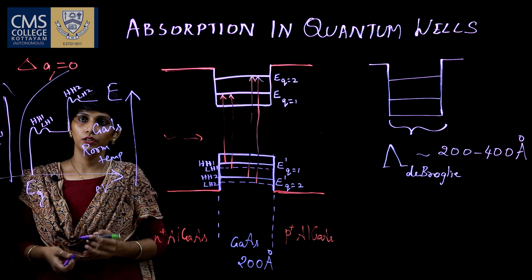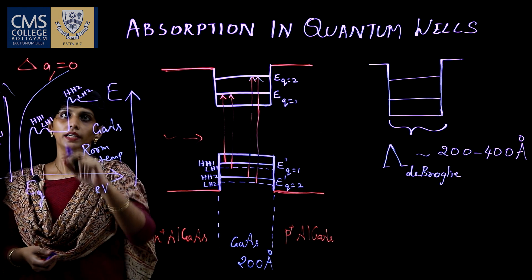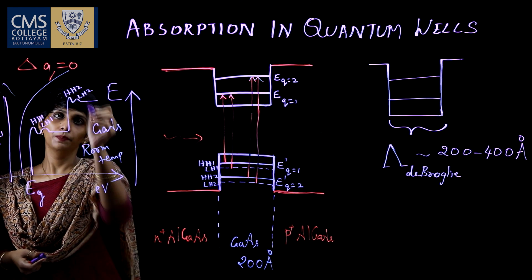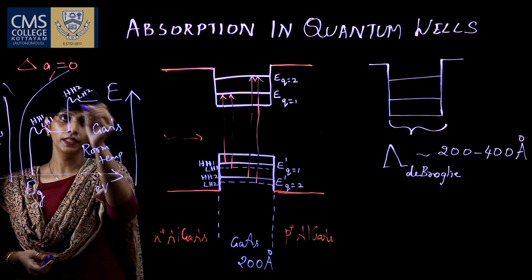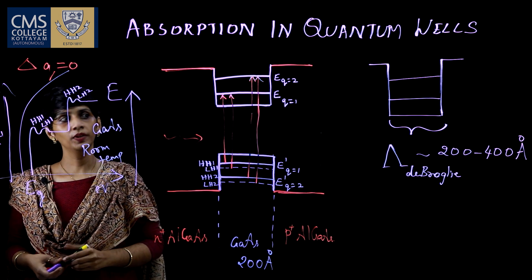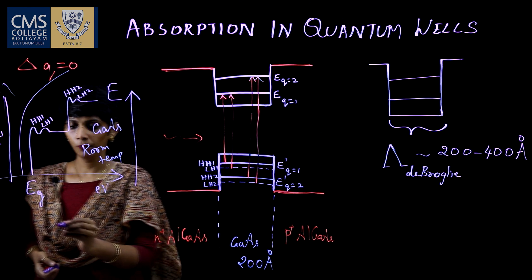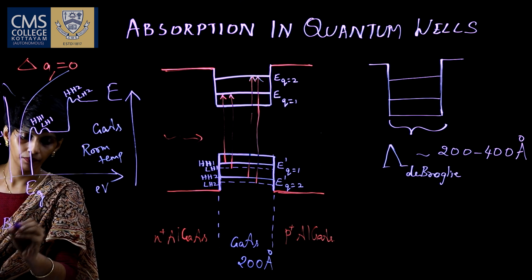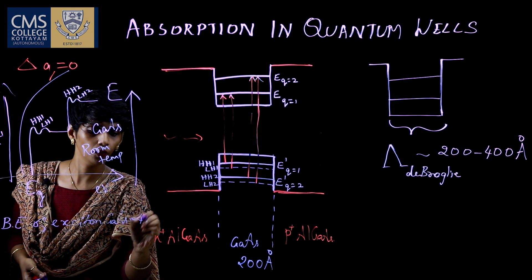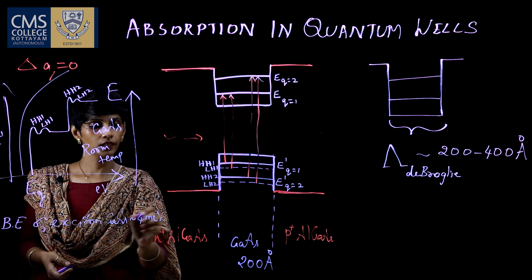The peaks in the absorption spectrum indicate the presence of excitons. These are excitonic peaks which are due to the quantum well structure. We can understand that in the case of quantum well structures, we can see excitonic peaks. However, we know excitons have a binding energy — the binding energy of an exciton in bulk gallium arsenide is approximately 4 meV. So in bulk semiconductors, even at room temperature, the exciton will split up.